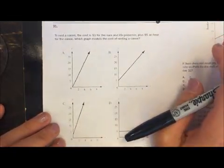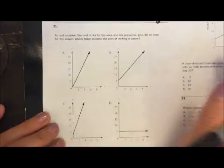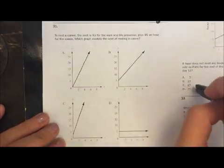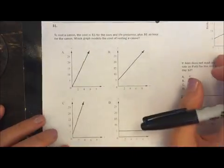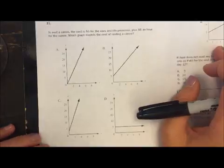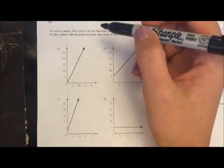Number 31. To rent a canoe, the cost is three dollars for the oars and the life preserver plus five dollars an hour for the canoe. Which graph models the cost of renting a canoe? Let's think, this is a linear function.